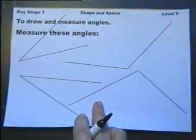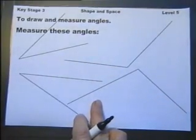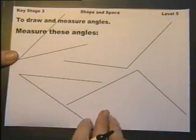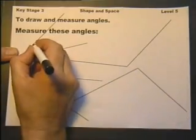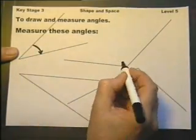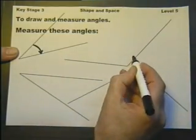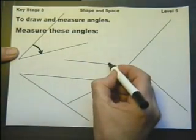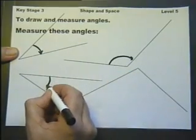First on this is to draw and measure angles. So first off let's measure these angles. Now really this should be an indication as to what angle because really it could be that angle or that angle. So I should have indicated which angle we're going to be looking at.